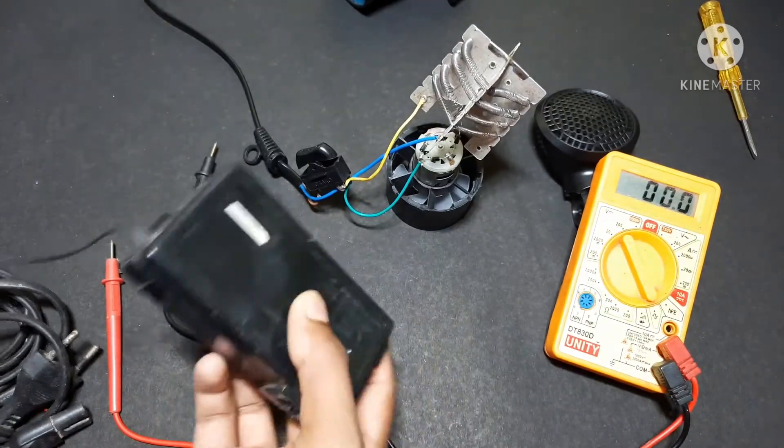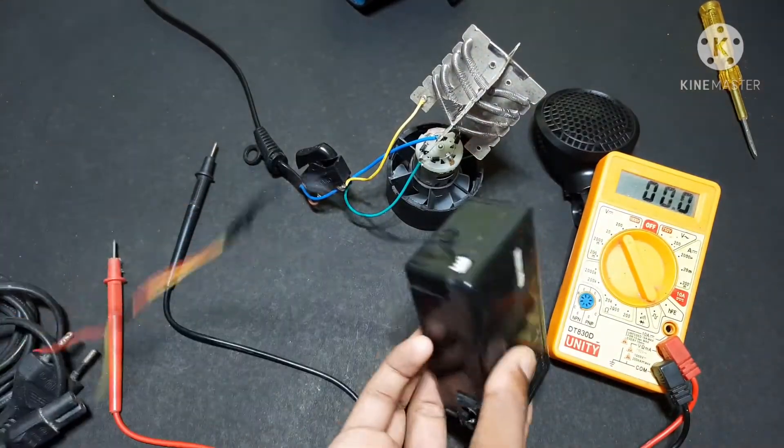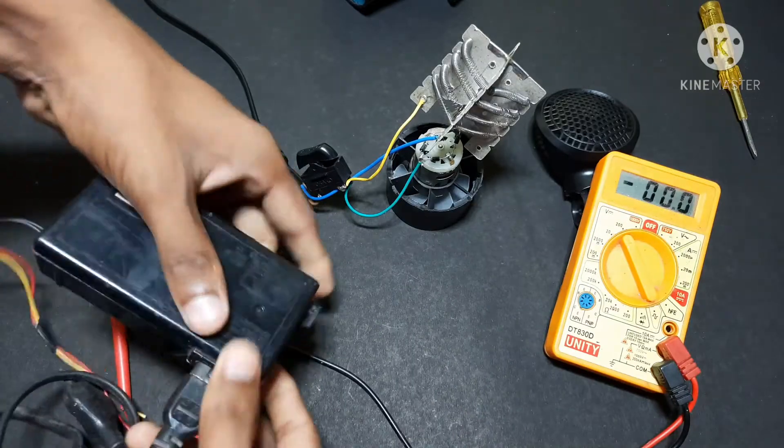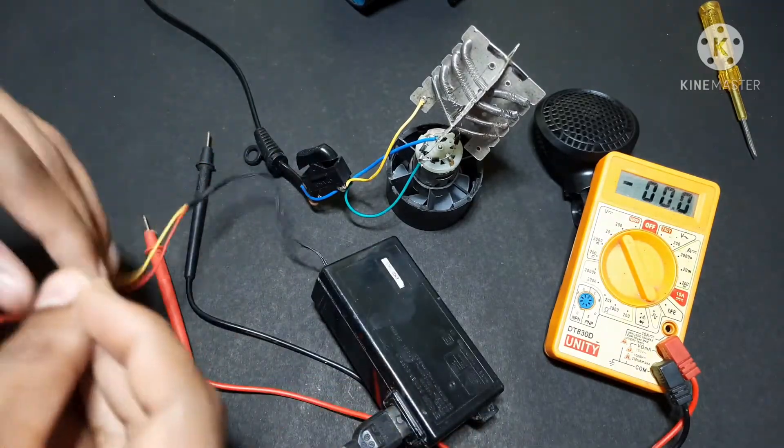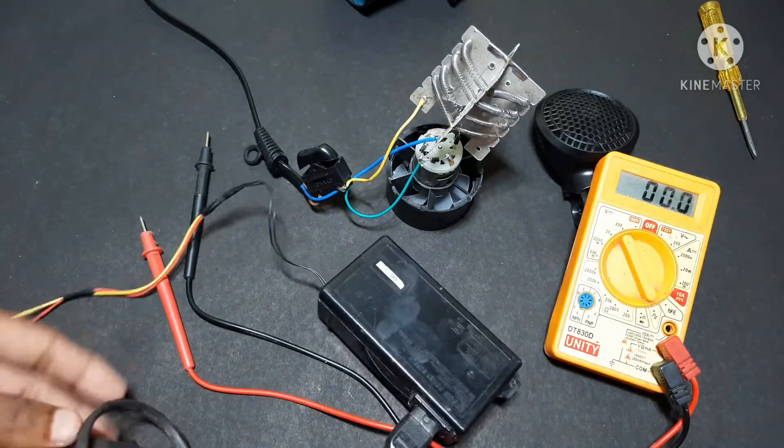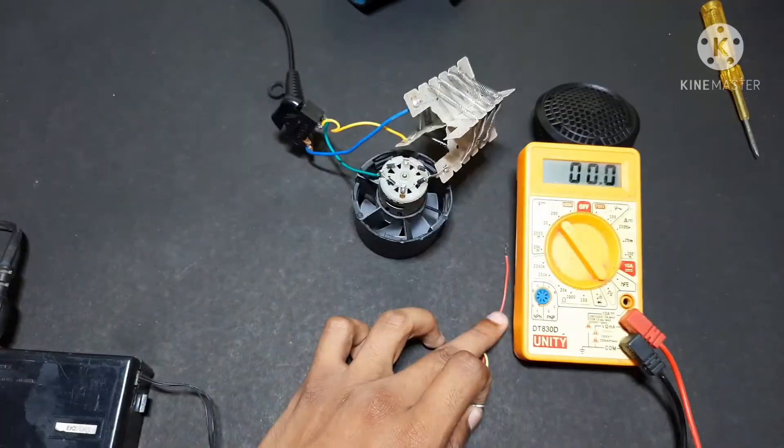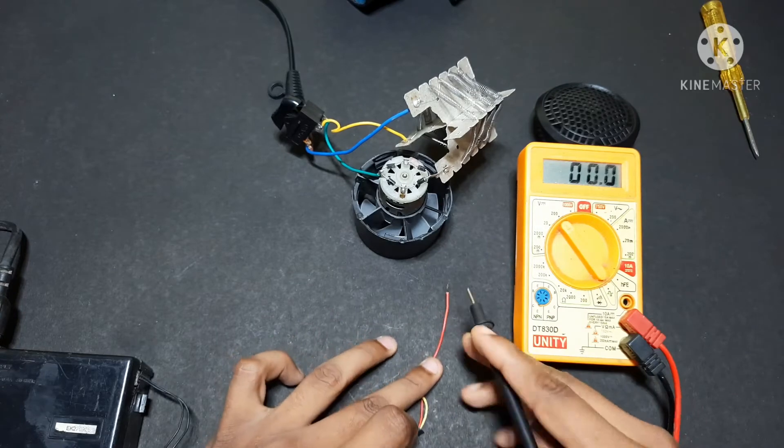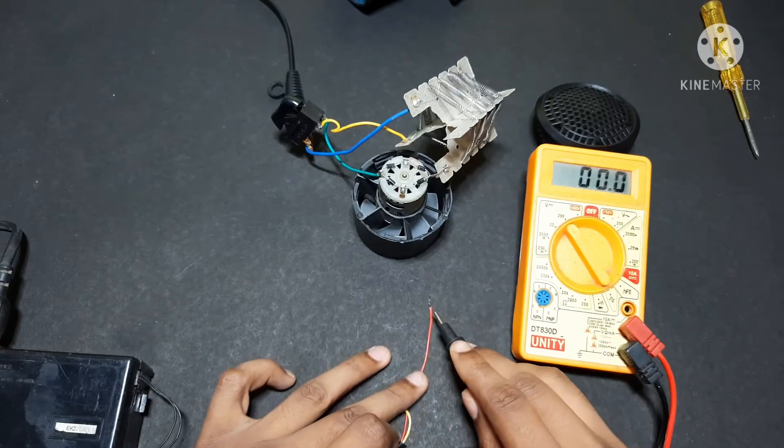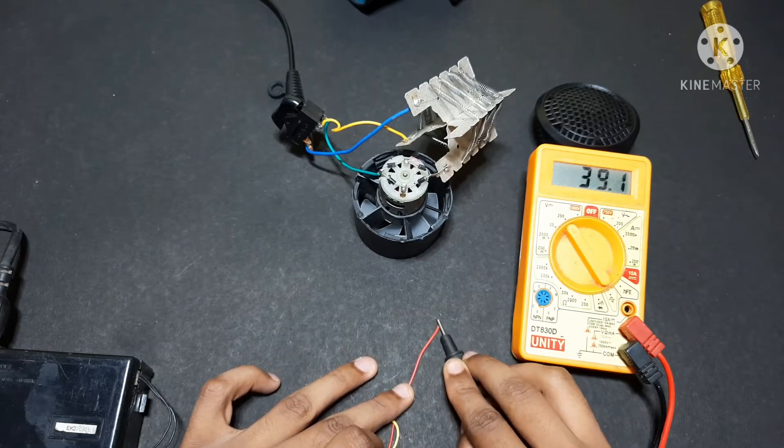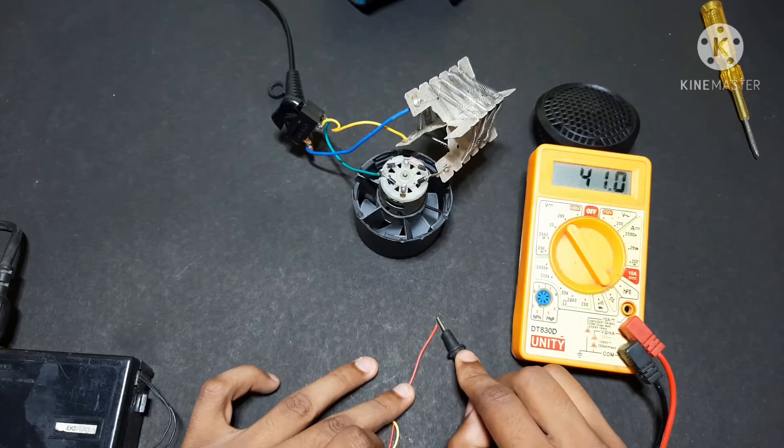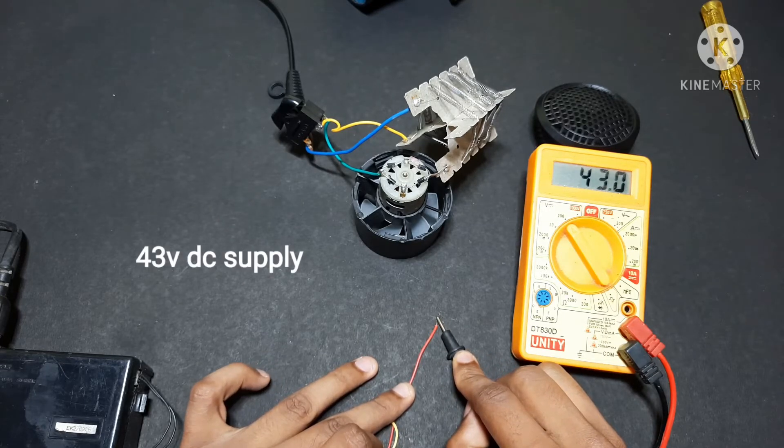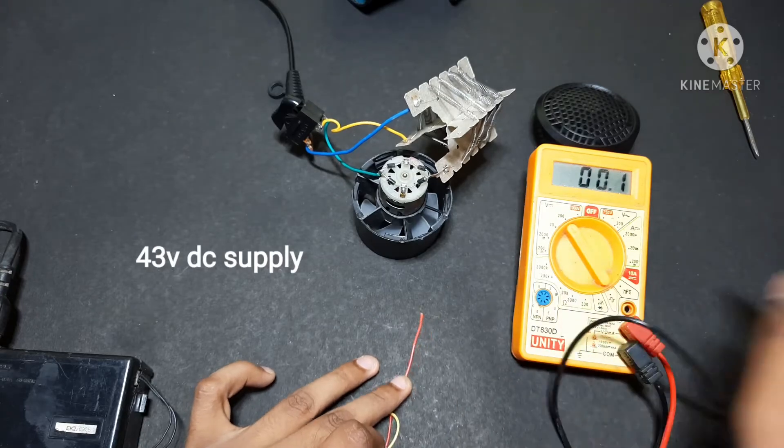I have a 42 volts DC supply line, so just check it out. Just look at this meter. I will connect the two wires of adapter. Approximately, yeah, 43 volts DC.